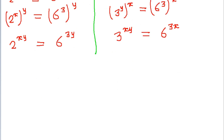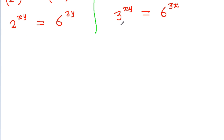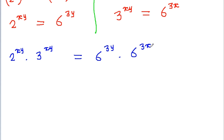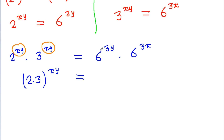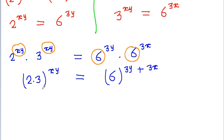Now if we multiply these two values, then the left hand side will become 2 to the power xy into 3 to the power xy, equal to the right hand side 6 to the power 3y into 6 to the power 3x. Since the power on the left is the same, that is xy, we multiply the bases to get 2 into 3 to the power xy. On the right hand side the base is the same, that is 6, so we add the powers to get 6 to the power 3x plus 3y.